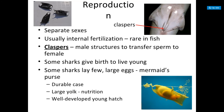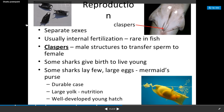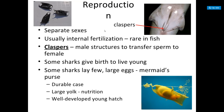Reproduction: they have separate genders — males and females. They usually have internal fertilization, which is rare in fish. Males have claspers to transfer sperm to females. Some sharks give birth to live young, which is viviparous. Some lay eggs called mermaid's purses, which is oviparous. Some have eggs that hatch internally and then give birth to live young — those are ovoviviparous.